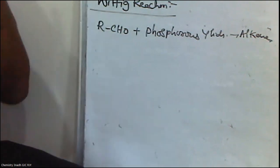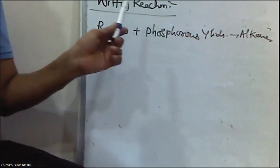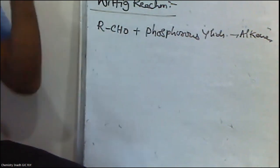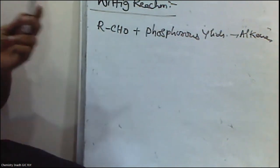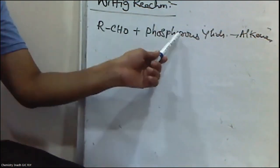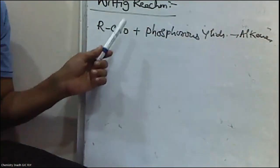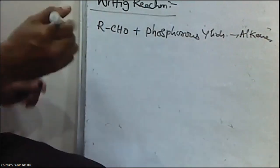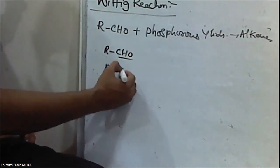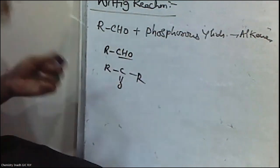When aldehydes or ketones are treated with phosphorous ylides, alkenes are formed. This reaction we call the Wittig reaction. Aldehydes are compounds containing a CHO group. A carbonyl group attached to two alkyl groups is called a ketone.